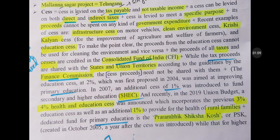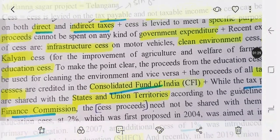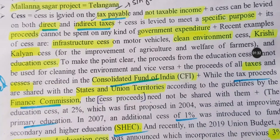Now we will talk about the topic with clear-cut clarity. The basics: cess is levied on the tax payable. You have a product, you have a tax payable amount — this is the base tax — and then there is an extra tax on top of that, which is the cess. It is not levied on taxable income; it is levied on the tax amount. This is the cess tax concept.